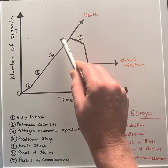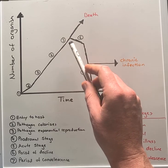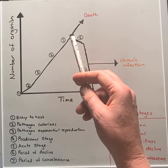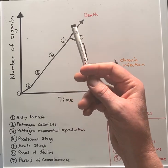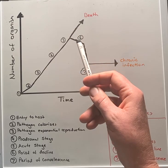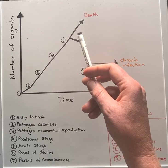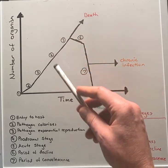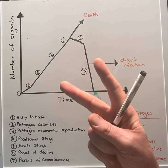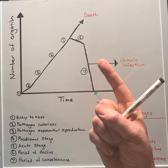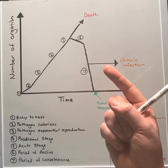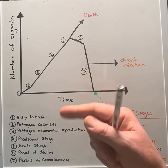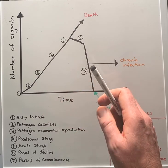Moving to step five, following the prodromal period is the acute or the period of illness. This is where the infectious disease with the clinical manifestations will reach a peak and be most severe. The length of time of this period will depend on two things: the virulence of the pathogen — how nasty it is — and the host's resistance, or how good the immune system is.